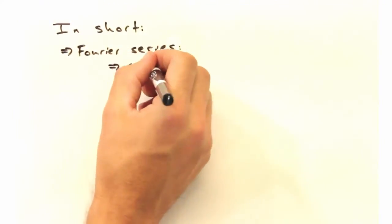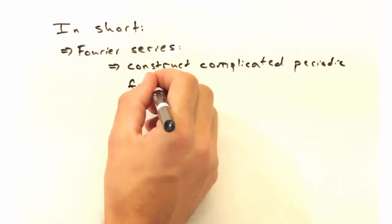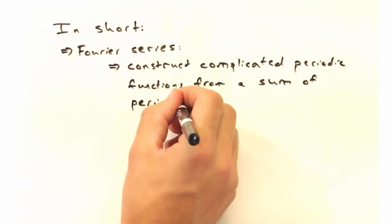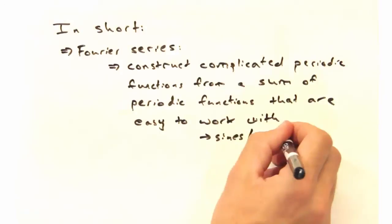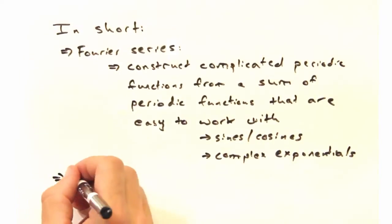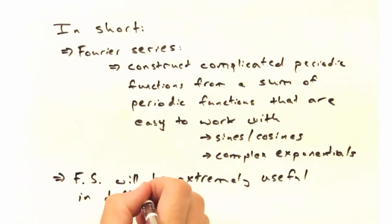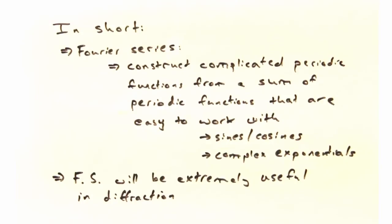So in short, a Fourier series is a way to construct something complicated with periodic functions that are easy to work with, like sines and cosines or complex exponentials. We'll be using them quite a bit in diffraction, so it'd be good for you to get a good grasp on them.